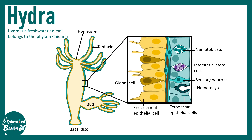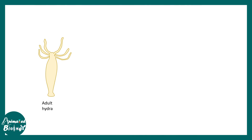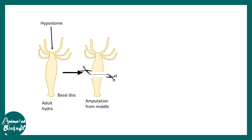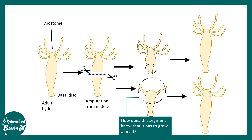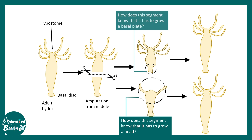Hydra has a huge capacity for regeneration. Imagine an adult Hydra that has been amputated in the middle — cut into two halves — and each of those two halves can eventually regenerate to give rise to the entire Hydra. The question is: how does the lower segment know where and how to make the head, and how does the upper segment know where to make the basal disc? We need to understand the molecular mechanisms of this process.